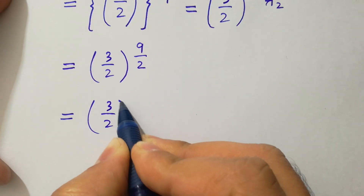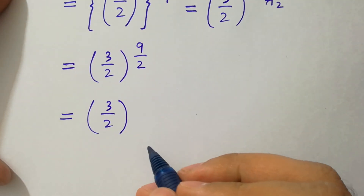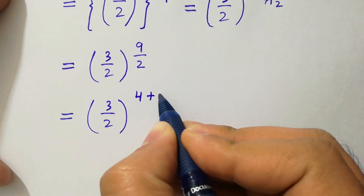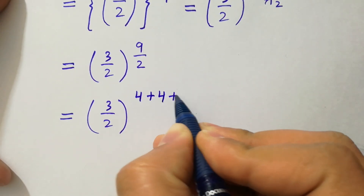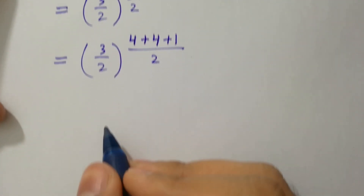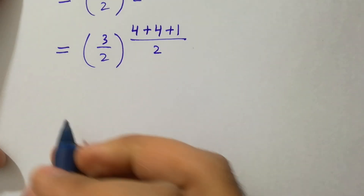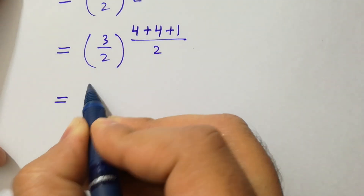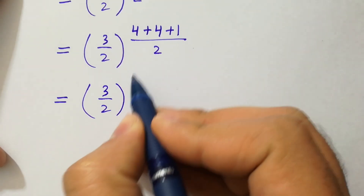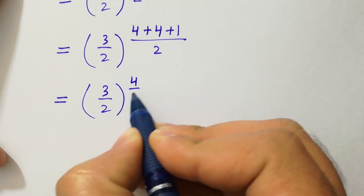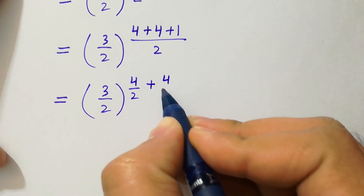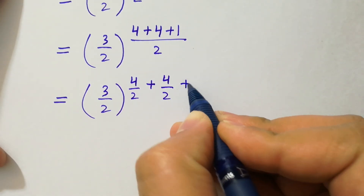Here 9 over 2 is the same as 4 over 2 plus 4 over 2 plus 1 over 2. Separating it into fractions: 3 over 2 to the whole power 4 over 2 plus 4 over 2 plus 1 over 2.